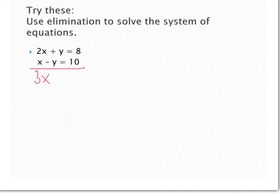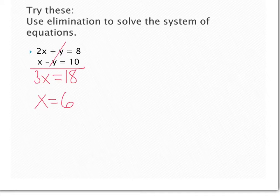1y and negative 1y cancel out. And then I'm left with 18 on the outside, so I get x equals 6 when I divide by 3 on the 18 and 3x.